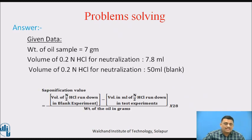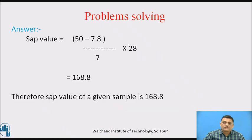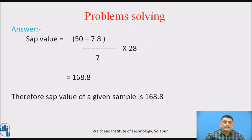Using the standard formula: saponification value = (volume of N/2 HCl in blank experiment − volume of N/2 HCl in test experiment) ÷ (weight of oil in grams) × 28. Substituting: (50 − 7.8) ÷ 7 × 28 = 168.8. Therefore, the saponification value of the given sample is 168.8.